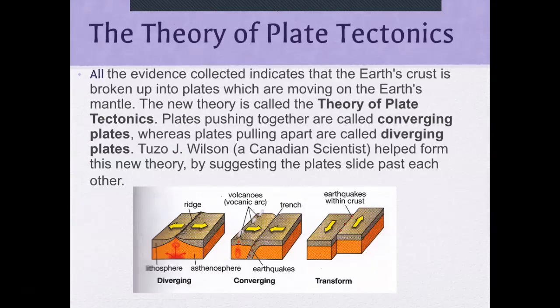The theory of plate tectonics: all the evidence collected indicates that the Earth's crust is broken up into plates which are moving on the Earth's mantle. The new theory is called the theory of plate tectonics. Plates pushing together are called converging plates, whereas plates pulling apart are called diverging plates. It was Tuzo J. Wilson, a Canadian scientist, who helped form this new theory by suggesting that plates also slid past each other — the transform fault on the right is what he contributed.